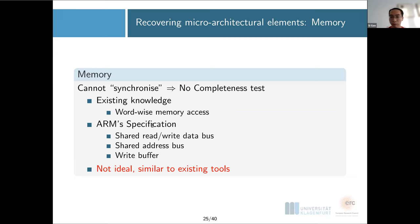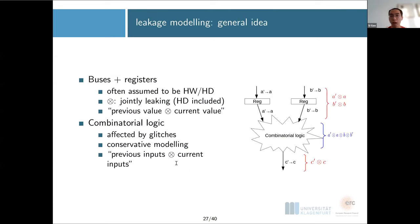Now we know what's happening in each microarchitecture wire. Then let's try to do leakage modeling. The general idea of this is: for each wire or register, the previous state is A, now we flip to A prime. The new state is A prime. We often assume they take the Hamming distance leakage. Here we do a bit more conservative: we assume A prime and A are jointly leaking. If you have a combinatorial logic, then we assume this can be affected by glitches, so we assume both inputs will be taken into consideration. So A, A prime, B, B prime are jointly leaking.